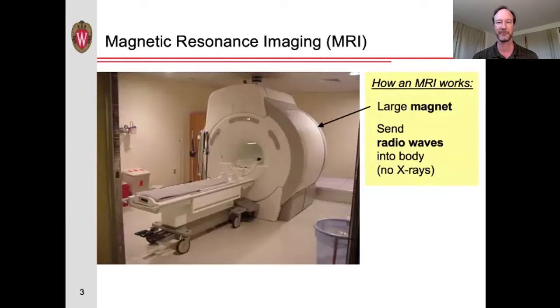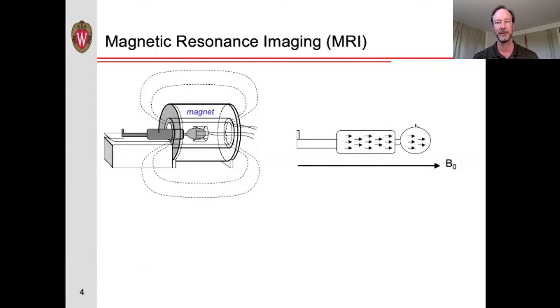This is a picture of an MRI scanner. The MRI scanner consists primarily of a very large magnet. We put a person into this magnet and then send radio waves into the body. An MRI scan does not use any x-rays or other ionizing radiation.